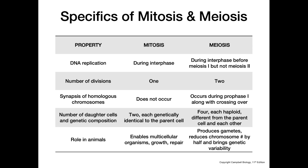However, in meiosis, we only have that replication taking place during the interphase that's before prophase I. Because in the interphase between meiosis I and meiosis II, there is not enough time to replicate the DNA, and we also don't want to replicate it because the whole point of meiosis is to make four haploid cells.